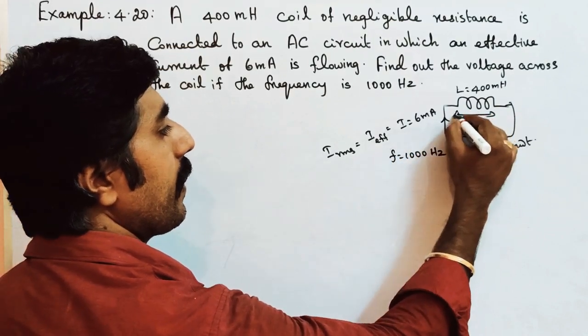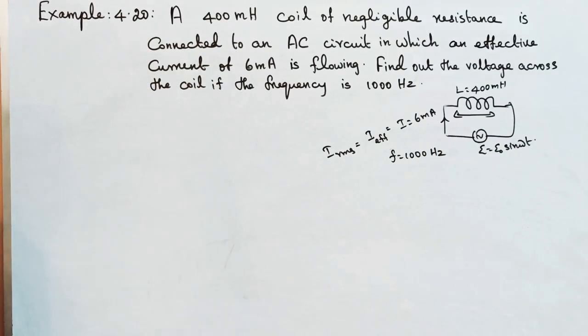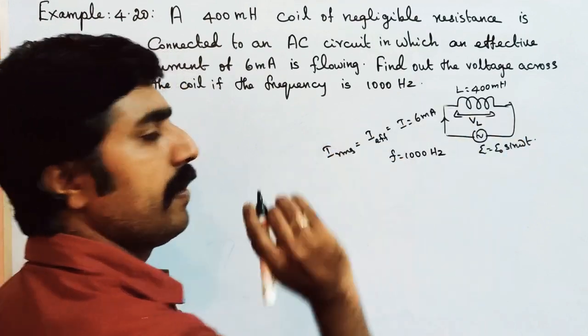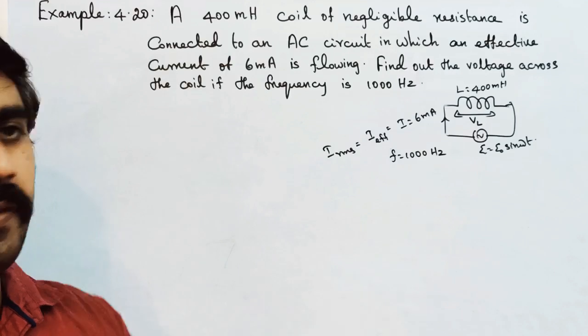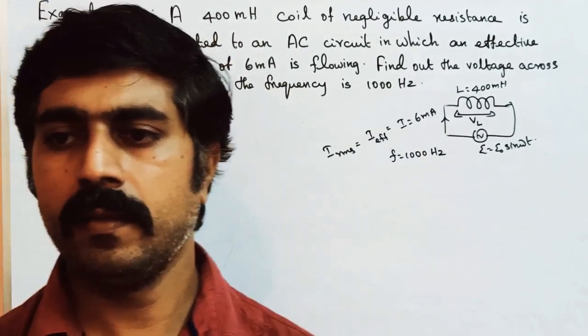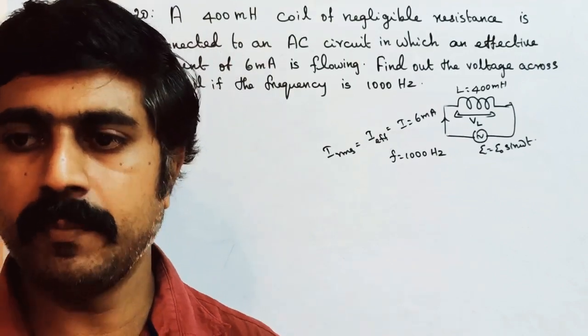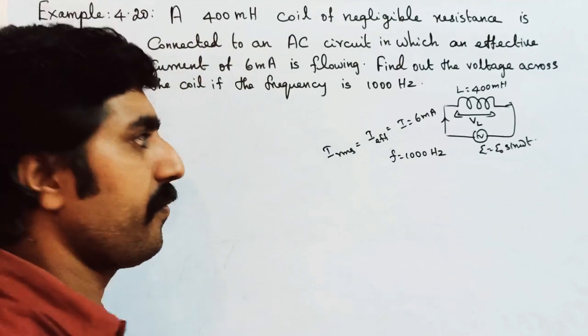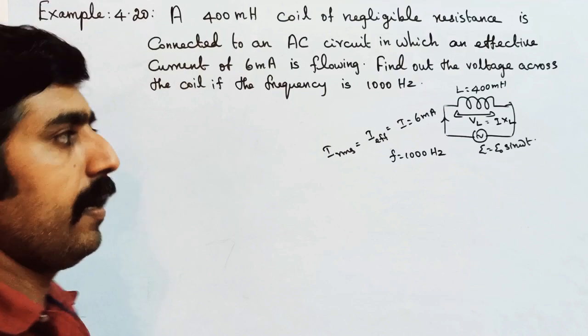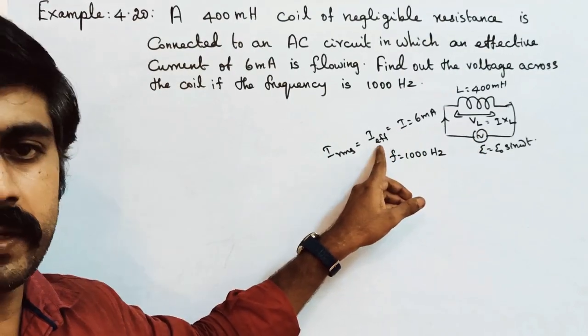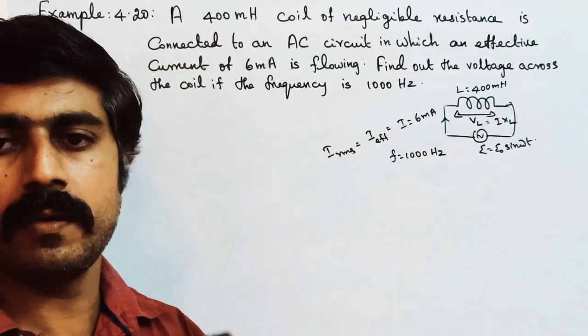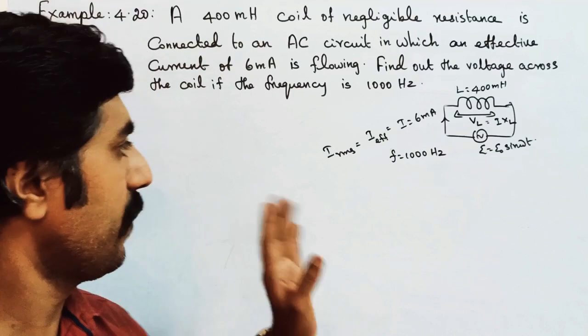In the inductor, you can drop voltage. So voltage across the inductor of inductance, that is VL. What formula? AC circuit with pure inductor. What formula? VL is equal to I XL, I is current, I effective or RMS current. Then the voltage is RMS. RMS is RMS, so we call it VL.